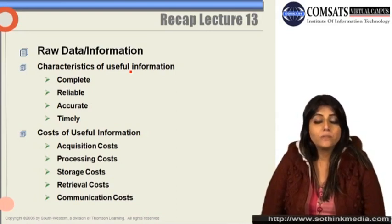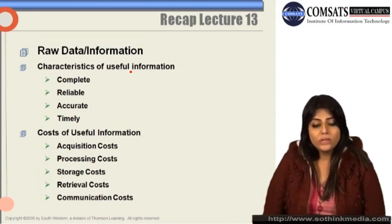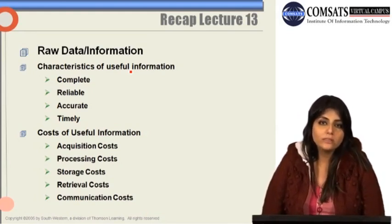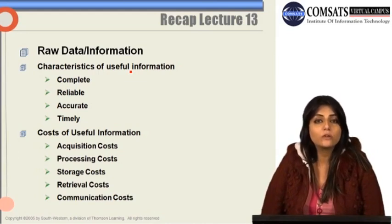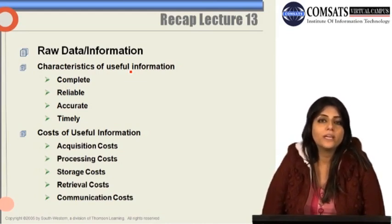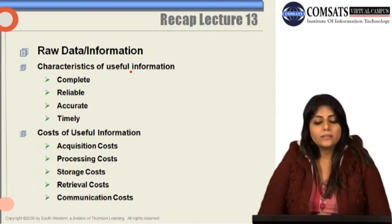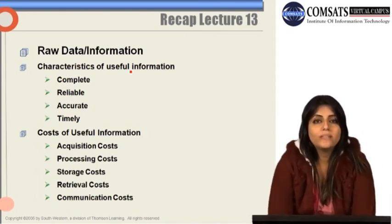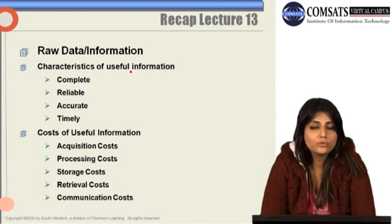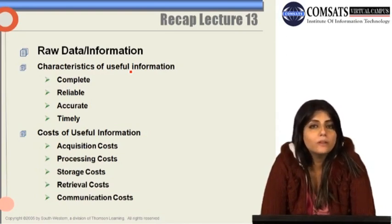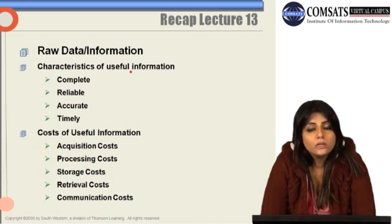Information is useful only when it is complete. Incomplete information does not give us a complete picture, and managerial decision-making may not be at an optimal level. Information is also useful when it is reliable — when it is coming from an authentic source and its validity and reliability are certain. If the information is not reliable or not coming from a good source, then that information is not useful.